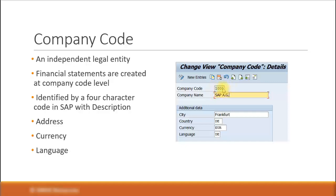The company code can be alphanumeric. In this example, the company code is 1000. You can give a company name for this, along with the address of the company, the currency it uses, and the language. These are all important attributes of the company code in SAP. Your financial statements — balance sheet, P&L or income statements, and cash flow statements — are all created at a company code level.